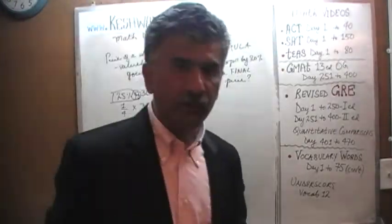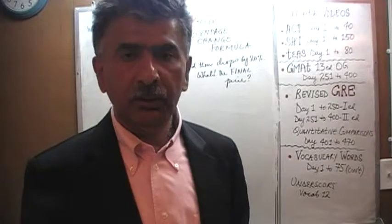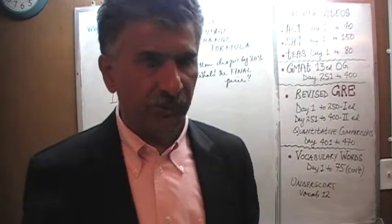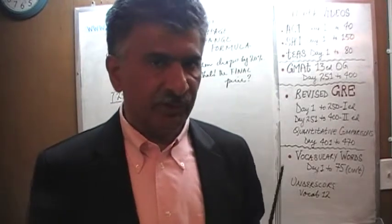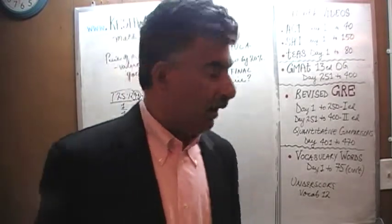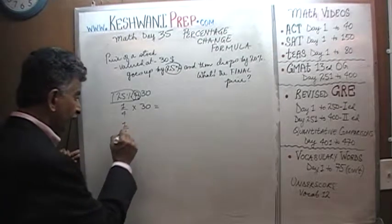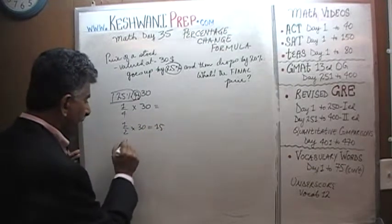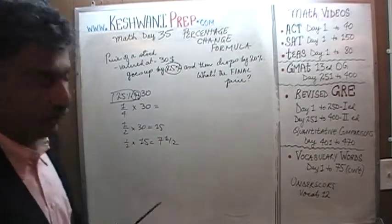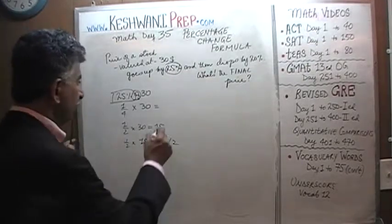Well, 1 quarter of 30 is very straightforward to find out. Whenever you have to divide something by 4, listen carefully, do it in two steps. First, find out the half of it and once you have the half of it, take the half of the half. Half of 30 is 15. And half of 15 is 7 and a half. So, 1 quarter of 30 is 7 and a half.